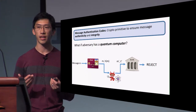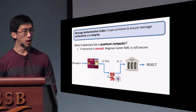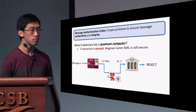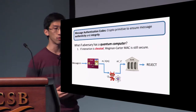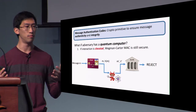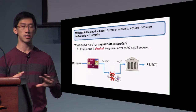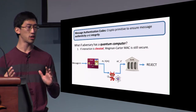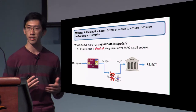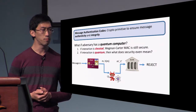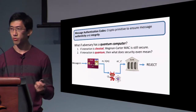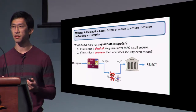What if the adversary has a quantum computer? If the interaction between all parties is classical, then the Wegman-Carter MAC still remains secure, because information-theoretic security means the only difference is more computational power, which doesn't affect security. But if the interaction is quantum, we have to ask ourselves: what does it mean to be secure?